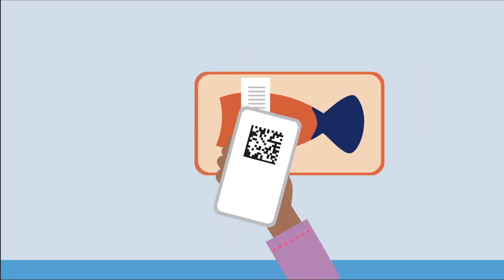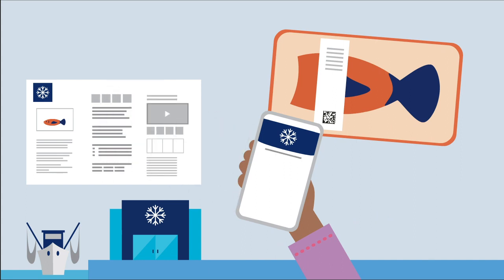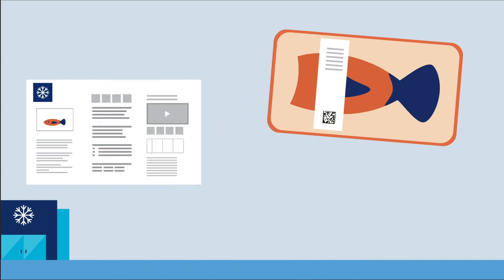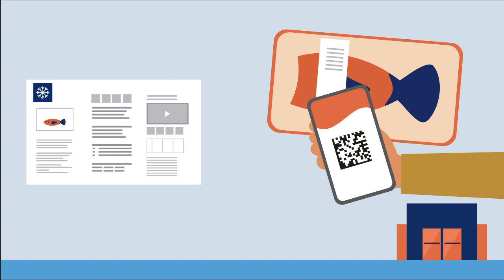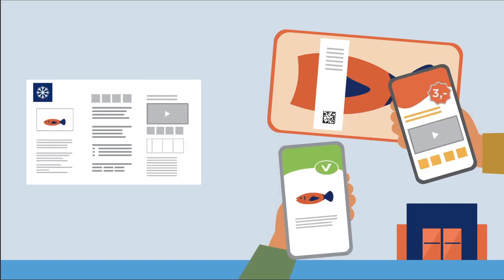Consumers scan a QR code with a GS1 digital link web address and see product information from the manufacturer. And if consumers scan that QR code in your retail or sustainability app, they will see additional information you'd like to share.